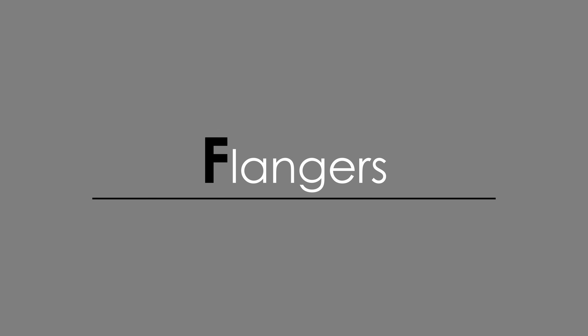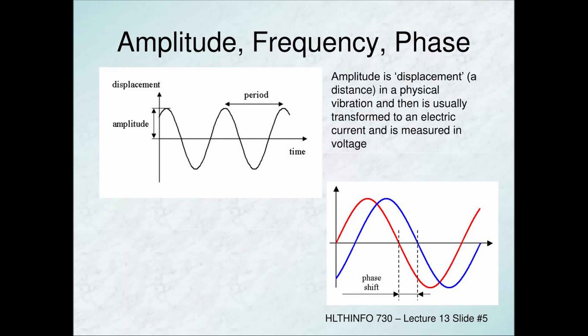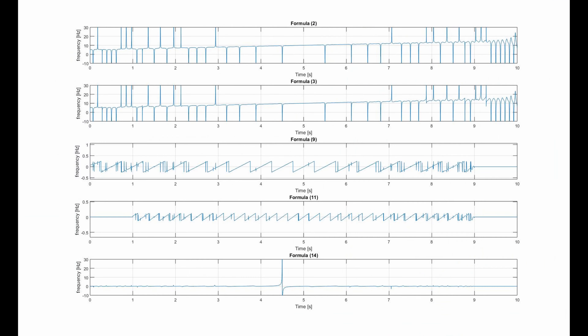The fun fact for this Friday is about flangers. What a flanger does is duplicate the incoming signal and cause that duplicate to play back at a slightly later time — basically offsetting the time. In addition to that time offset, it also slowly changes the offset time of the duplicate constantly over time.